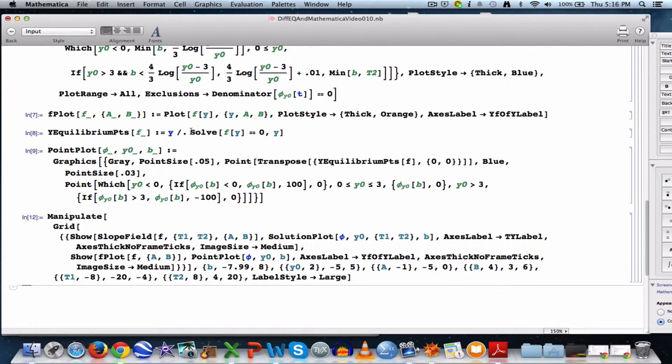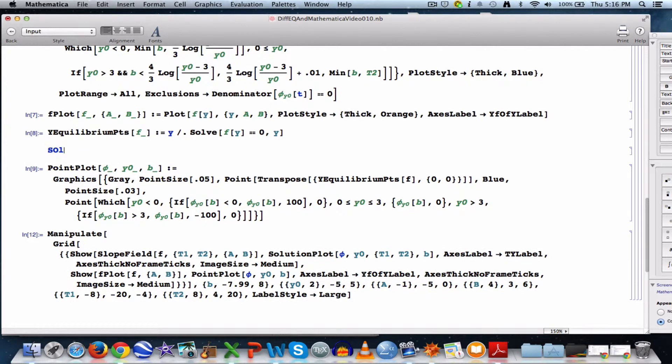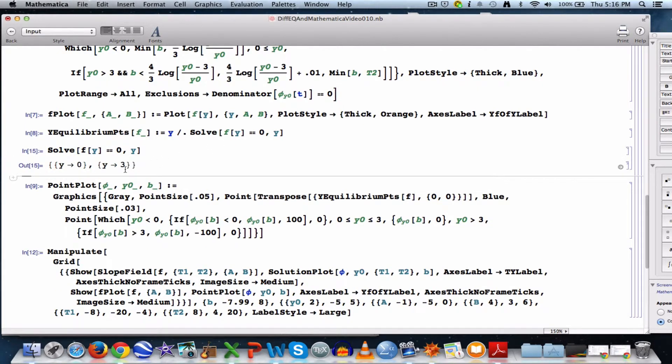What does solve do? Solve solves equations. And so if I type solve f of y equals 0, comma y, that solves the equation f of y equals 0 for y. Finds the equilibrium points of 0 and 3. When I do y slash dot in front of that, that stores those solutions in a list of two values, 0 and 3.